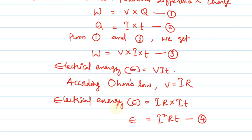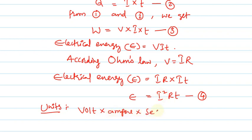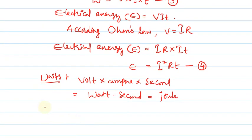Let us see the units for electrical energy. From the relation E = VIt, the units of electrical energy are: potential difference is measured in volts, current in amperes, and time in seconds — so that is volt × ampere × second, which can be written as watt-second. We know that watt-second is nothing but joule, so the SI unit of electrical energy is joule, represented with capital J.